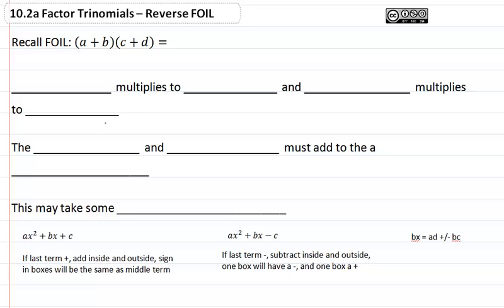10.2a factor trinomials reverse FOIL. Recall that when we FOIL, we take our a times our c plus our a times our d plus bc plus our b times our d. We are distributing our a and we're distributing our b.